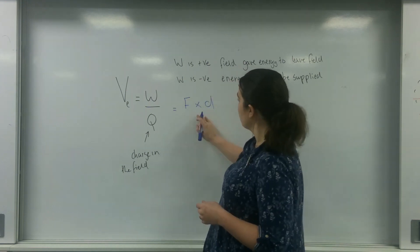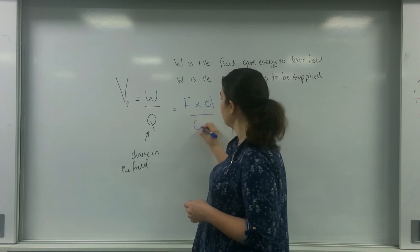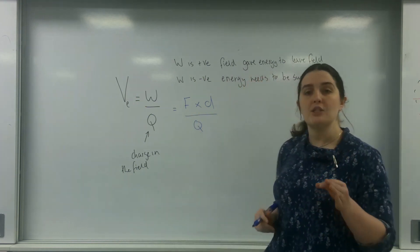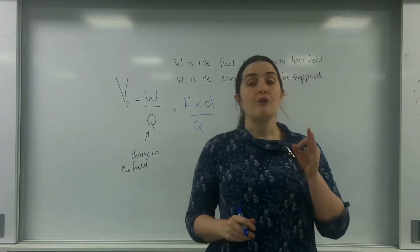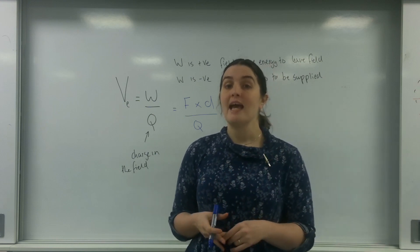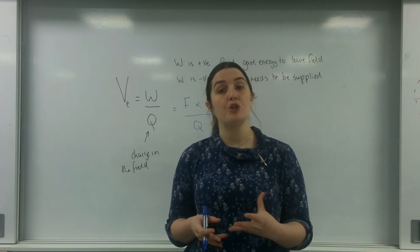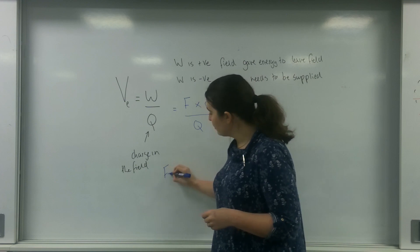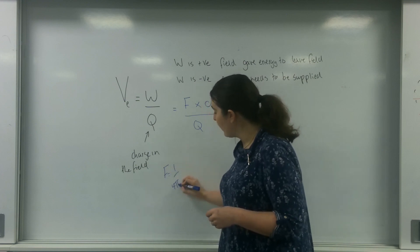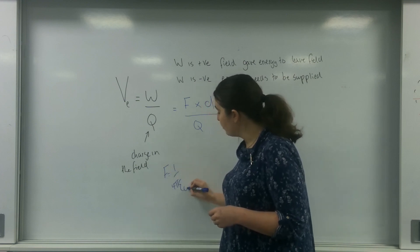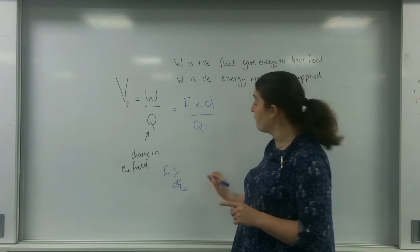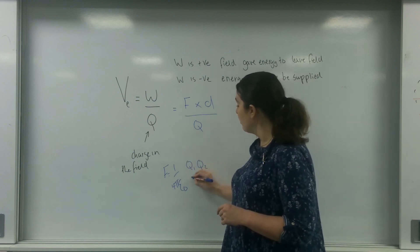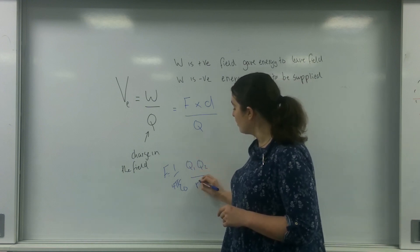That's force times distance over charge. And of course, in a radial field, the force that is causing this is Coulomb's law. So F is going to be 1 over 4πε₀ — which is the permittivity of free space — times Q1 times Q2 over R squared.